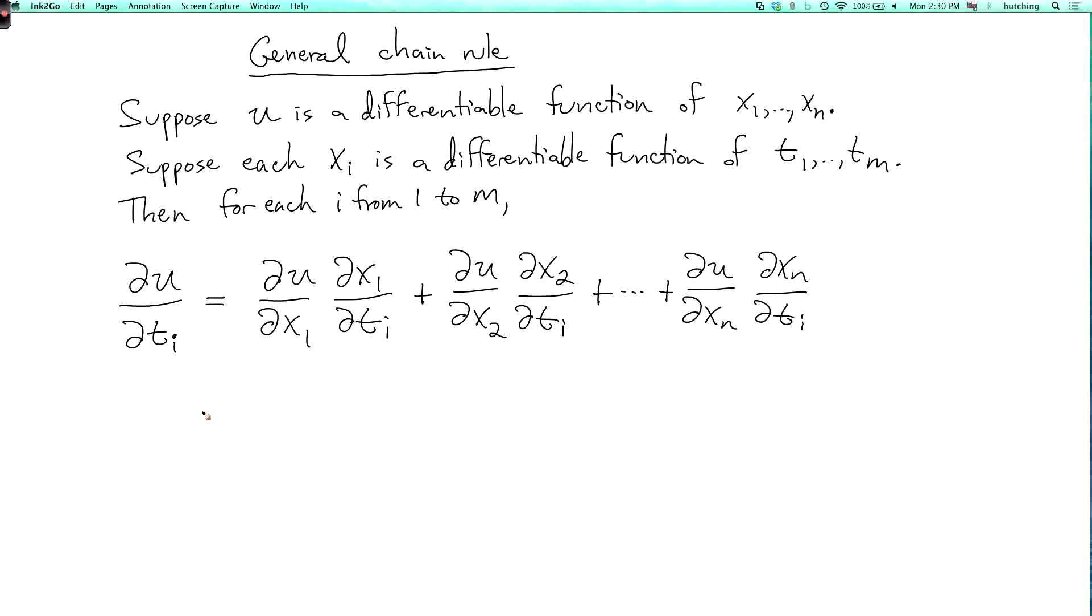Or, using summation notation, this is the sum from j equals 1 to n of partial u partial xj, partial xj partial ti.